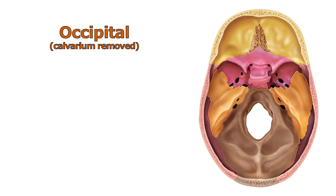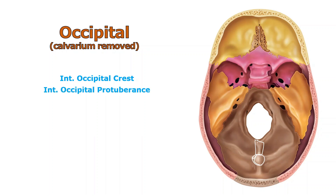Now let's take a look inside by removing the calvarium. The bone in brown is the occipital bone — easy to spot because we can see the foramen magnum with the white showing through. From this internal aspect, we can see the internal crest and the internal protuberance, located in almost the exact same spot as the external structures.